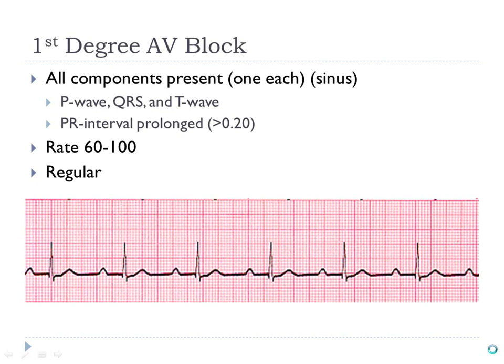First degree AV block is probably the easiest block to identify. It looks like normal sinus rhythm — you have a P, QRS, and a corresponding T. Everything looks nice. The only abnormality in a first degree AV block is that the PR interval is too long — it's taken the electrical activity too long to get through the atrium. The PR interval will be greater than 0.2 seconds; 0.24 is too long. That's a first degree block.